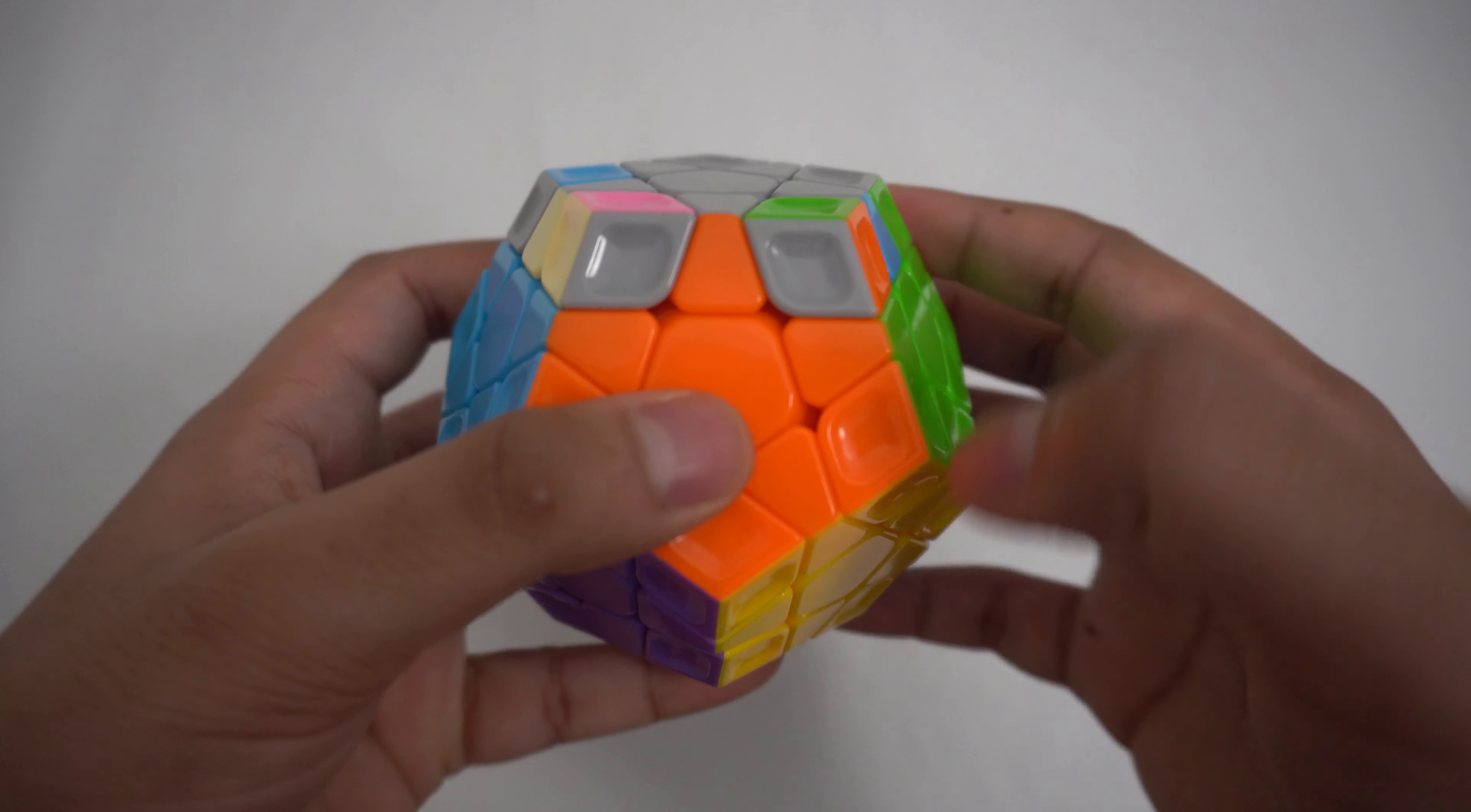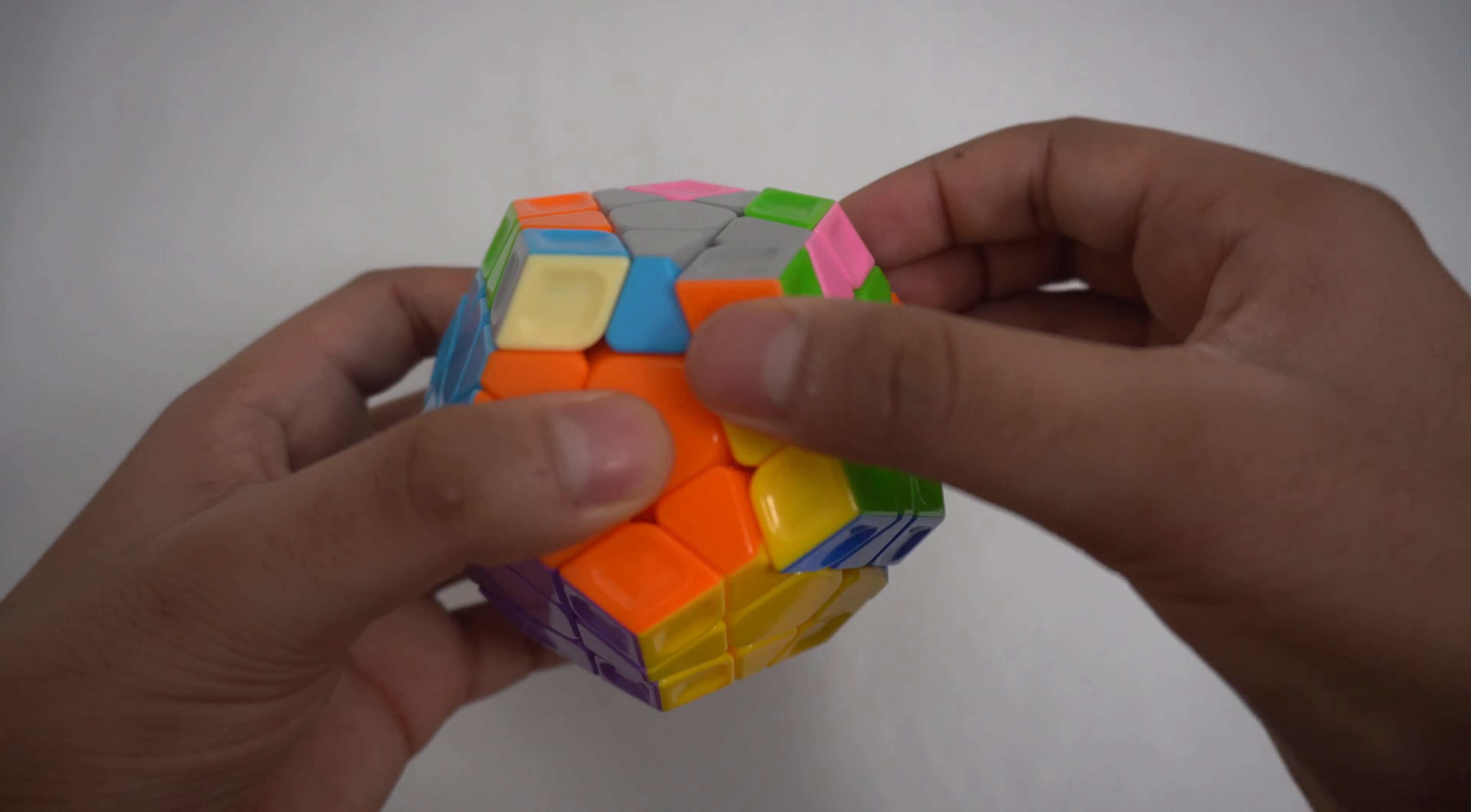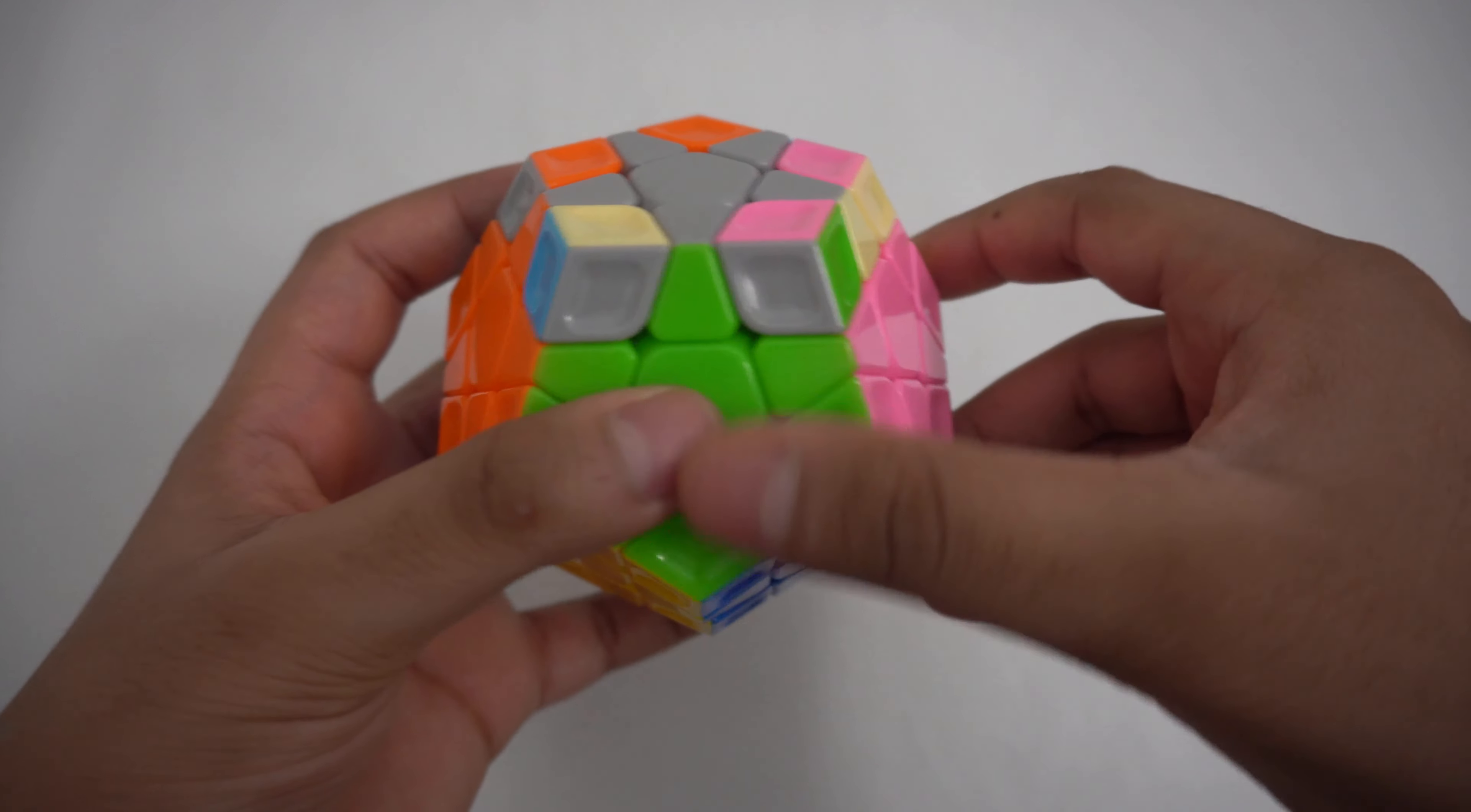Once you have one piece that is correct, face it towards you and do this algorithm until the edge piece on the right is correct as well, which is R U R prime, U R U R prime. After getting the case where two correct edge pieces are next to each other, do one of the algorithms that were previously shown to get every edge piece correct.